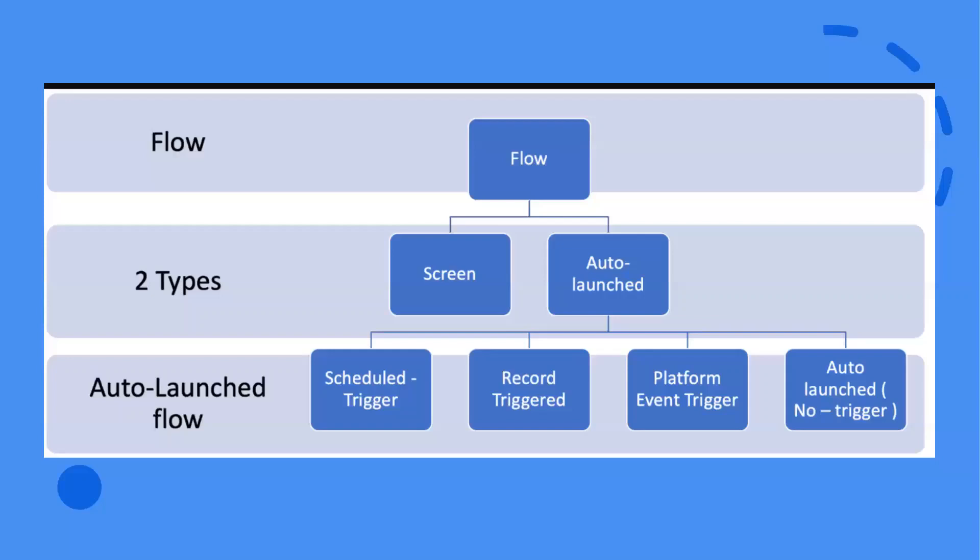The second type is Record Trigger Flows. These run in the background when a record is created, updated, or deleted. For example, if someone is creating an Account with the Industry set to Education, you can write a record triggered flow to automatically fill the Account description with specific values whenever that condition is met.